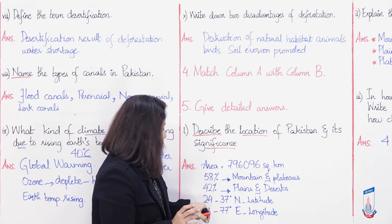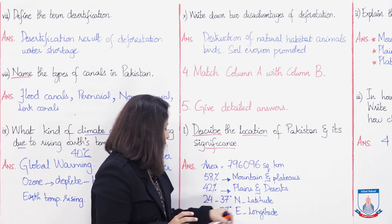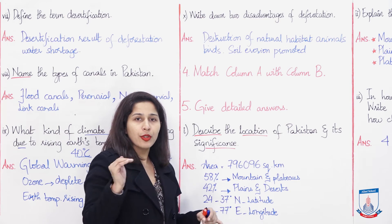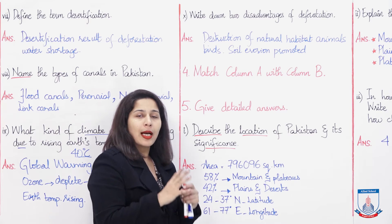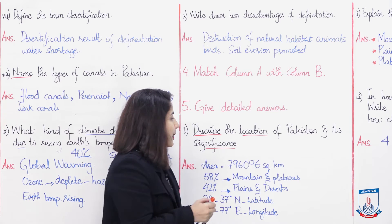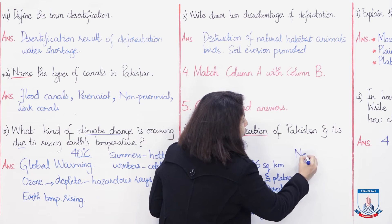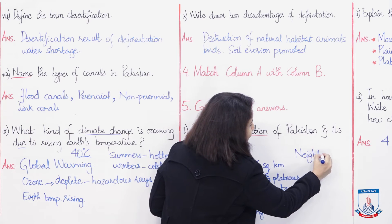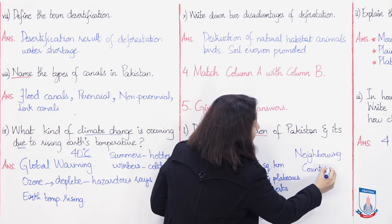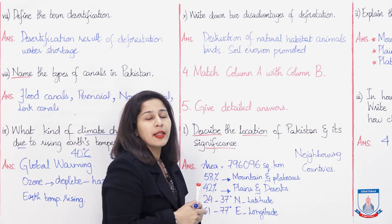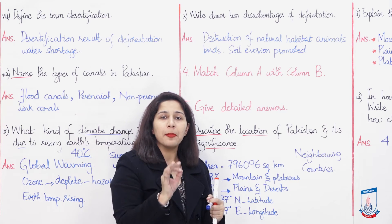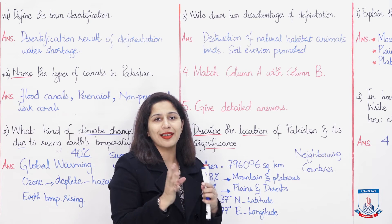Give the exact location: Pakistan on the globe is at 24 to 37 degrees north latitude and 61 to 77 degrees east longitude — latitude is the horizontal line and longitude is the vertical line. Then mention Pakistan's neighboring countries: China, India, Afghanistan, and Iran are the major border-sharing neighbors.